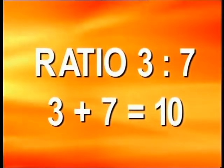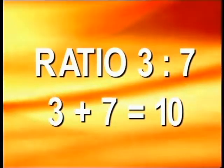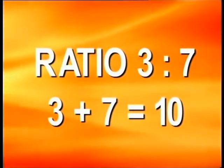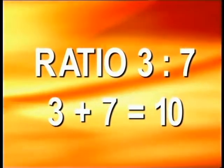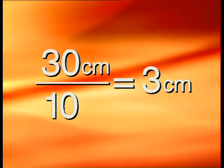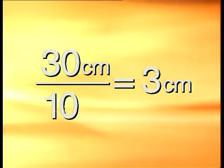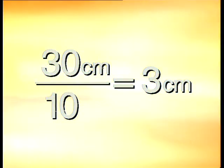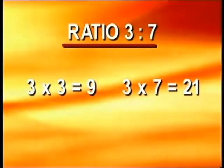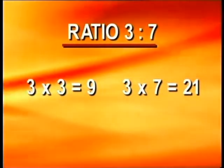The important points are: add the ratio units together to get an understanding of how the line will be divided — that is 3 plus 7 equals 10. Then divide the actual length by the total units — that is 30 centimeters divided by 10 units equals 3.